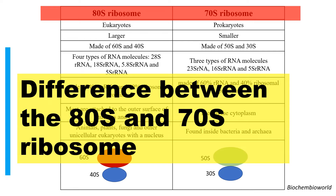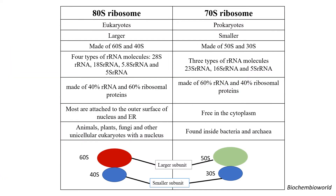Welcome back to my channel Biochem Bio World. In today's video, I'll be discussing the differences between the 80S and the 70S ribosome. The 80S ribosome is found in eukaryotes, whereas the prokaryotes have the 70S ribosome.